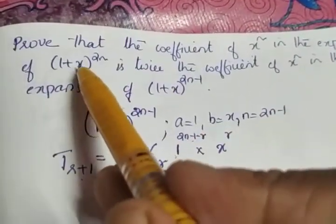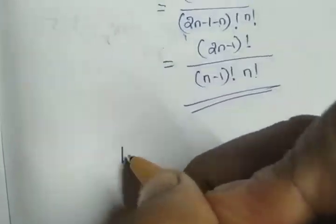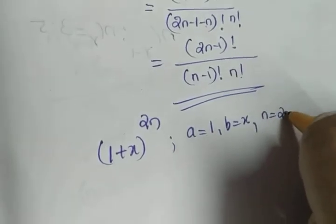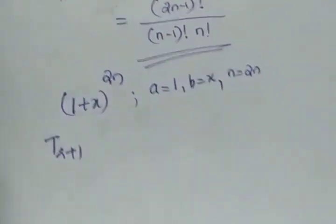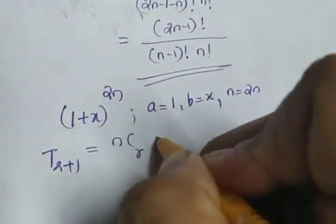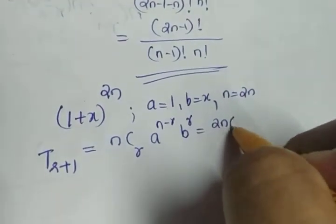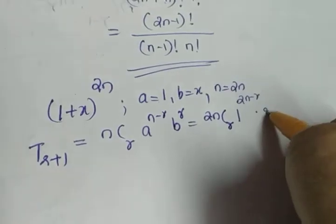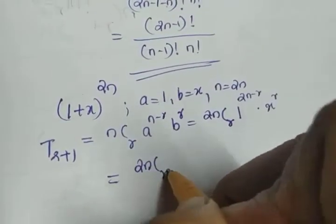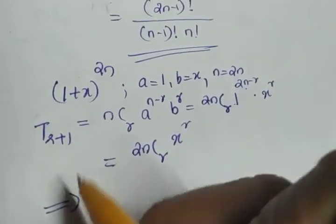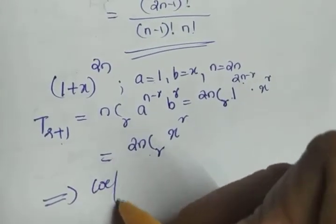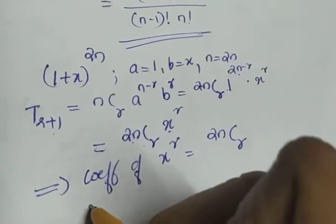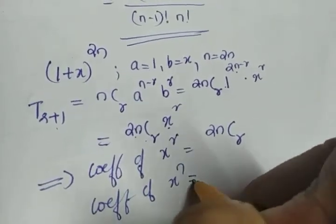Now we take the second expression: (1 + x) raised to 2n. Here a is 1, b is x, and n is 2n. The general term T(r+1) equals C(2n, r) times 1 raised to (2n-r) times x raised to r, which gives C(2n, r) times x raised to r. So the coefficient of x raised to r is C(2n, r), and the coefficient of x raised to n is C(2n, n).